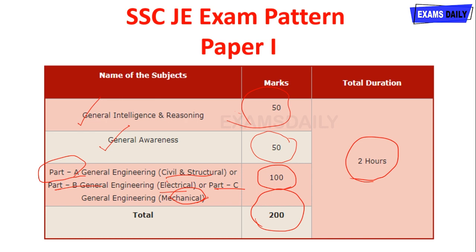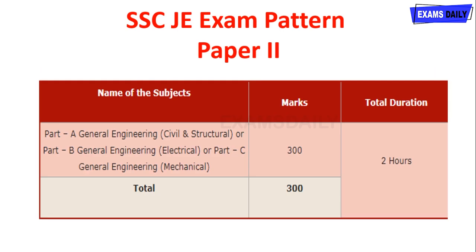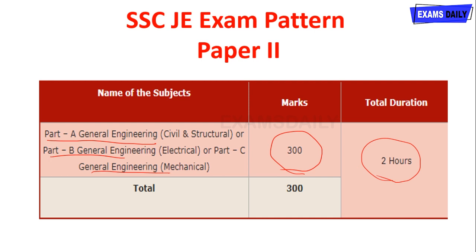Once you have completed Paper 1 and qualified with minimum qualification marks, you are eligible to write Paper 2. Paper 2 is fully based on your subjects only. You will choose your subject — Part A for Civil and Structural Engineering, Part B for Electrical Engineering, or Part C for Mechanical Engineering. Totally, you are going to write Paper 2 for 300 marks, and the time duration is 2 hours.